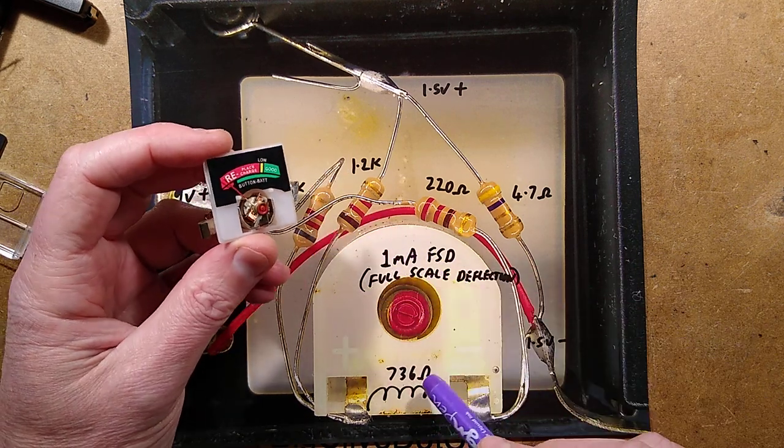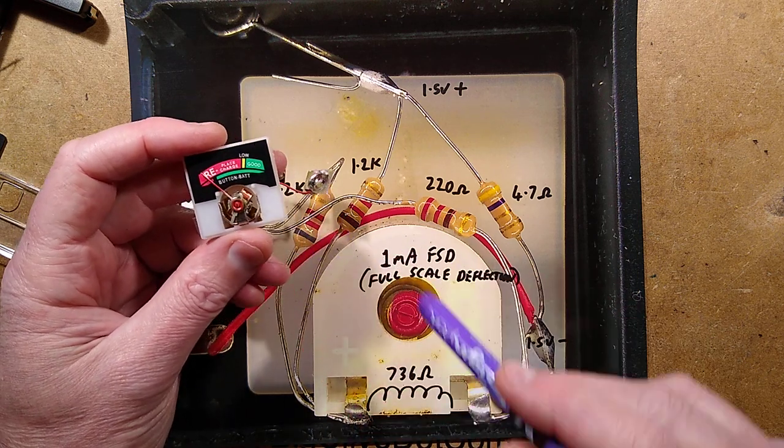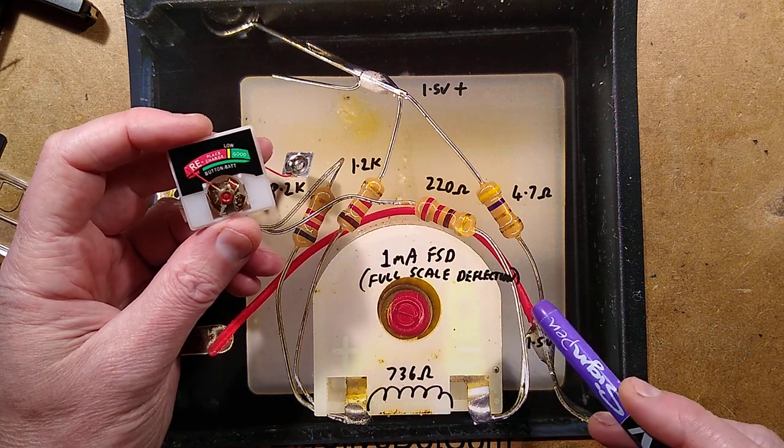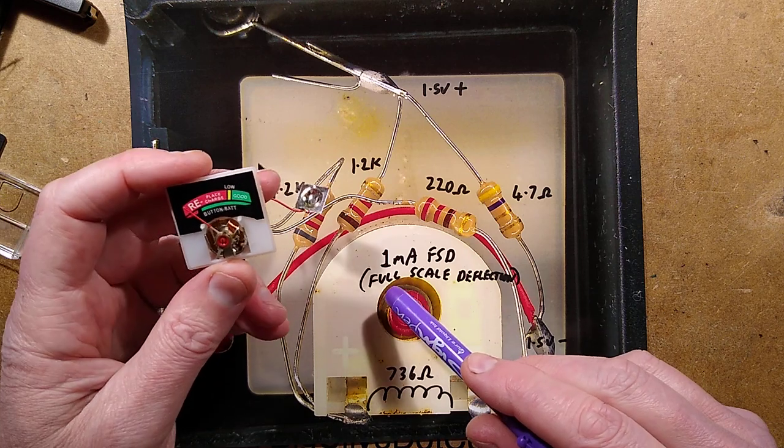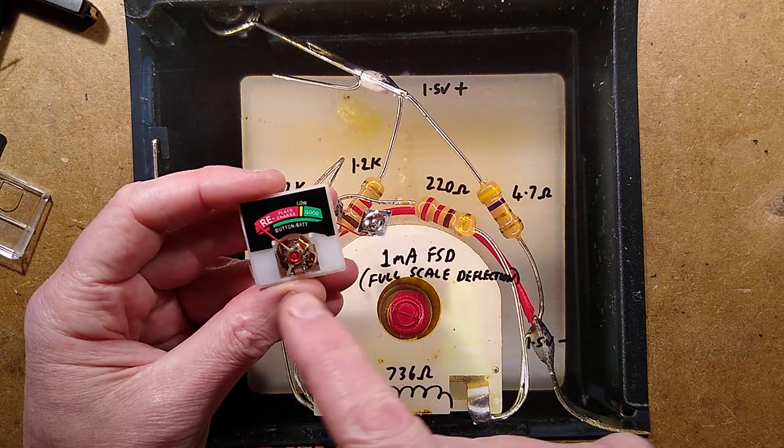So the coil itself has a resistance in this case. Well, impedance, technically speaking, because it's a sort of inductive component, but it's 736 ohms and it's a 1 milliamp full scale deflection meter.